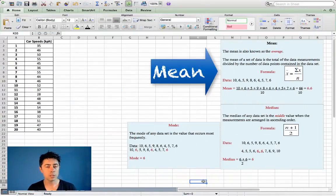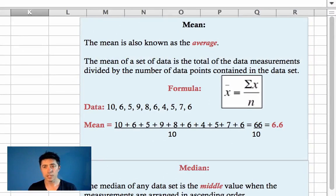Firstly, the mean. The mean is also known as the average, and the mean of a data set is the total of the data measurements divided by the number of data points contained in that data set.